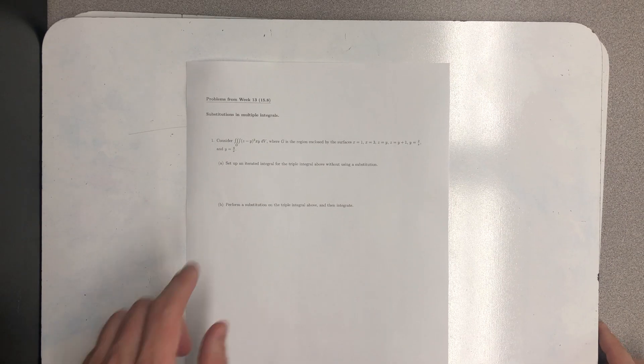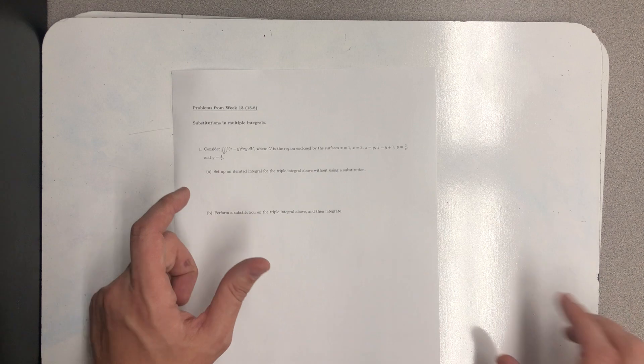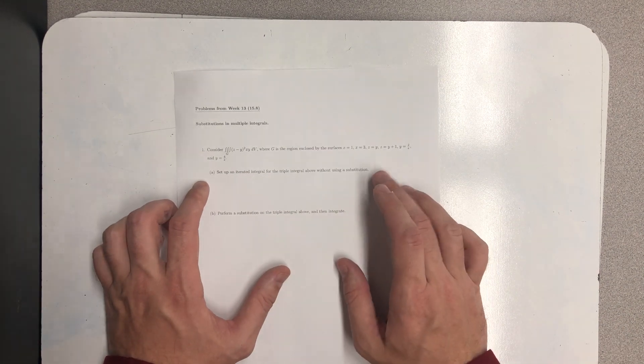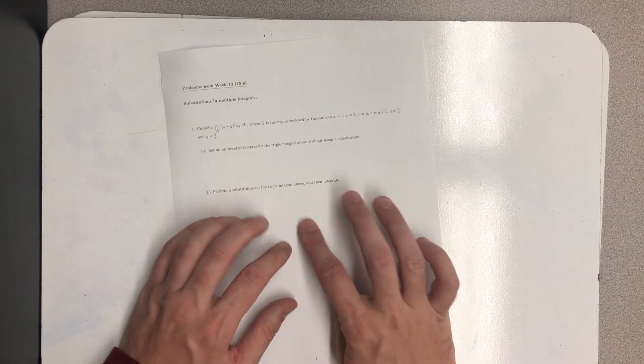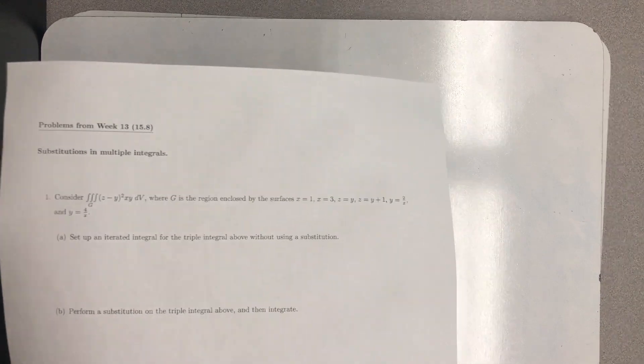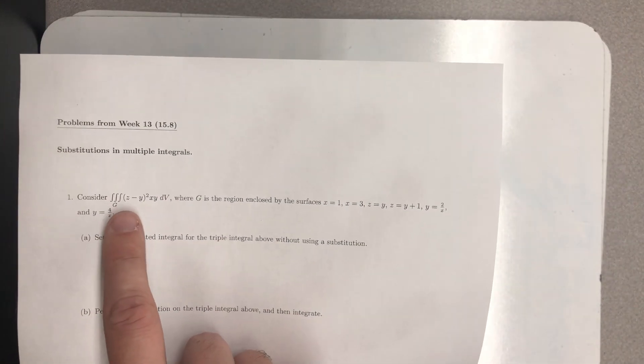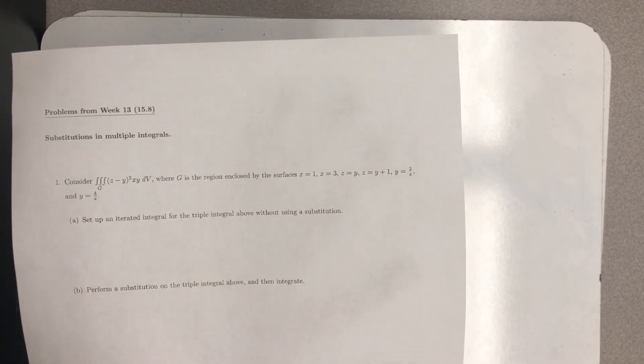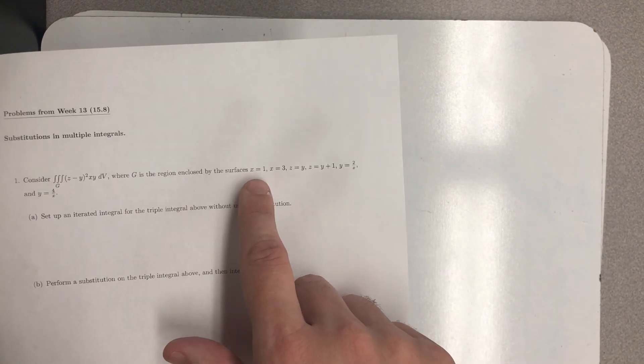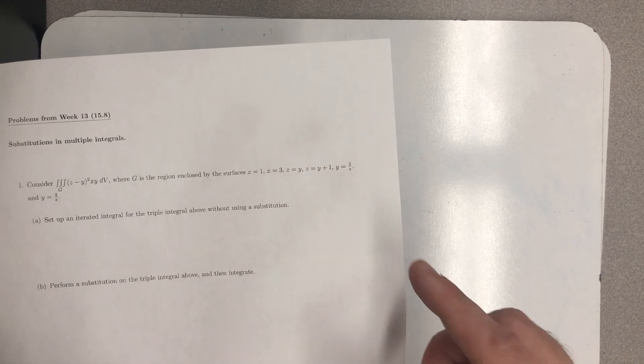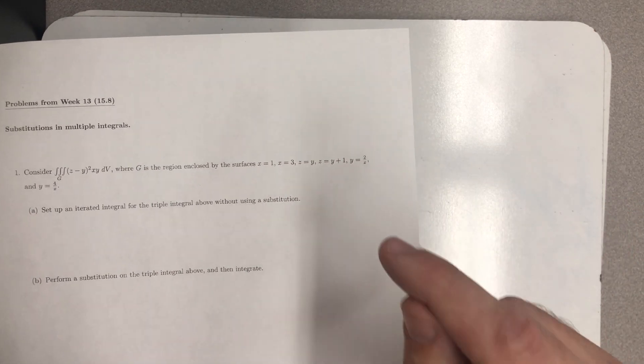I want to integrate this triple integral. After first setting it up as a triple integral, an iterated integral with no substitution, I then want to perform what I hope to be a good substitution that makes it easier to integrate. So I'm integrating over a region G, z minus y squared times x, y, dV, and G is a region enclosed by four planes: x equals 1, x equals 3, z equals y, z equals y plus 1, and two hyperbolic cylinders: y equals 2 over x and y equals 4 over x.